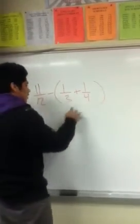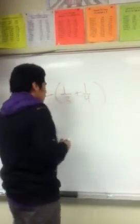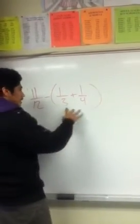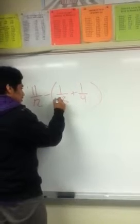First thing we need to do is, in the parentheses, they don't have the same denominator. You multiply by 3, which is 4.